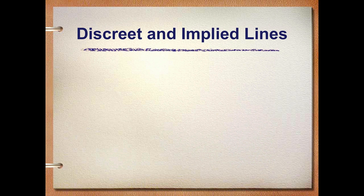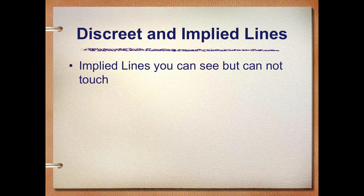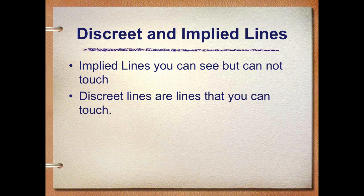Discrete and implied lines — these are two types of lines that you will have to go out and photograph. The implied lines you can see but you cannot touch. Discrete lines are lines that you can touch; you can actually physically hold them.